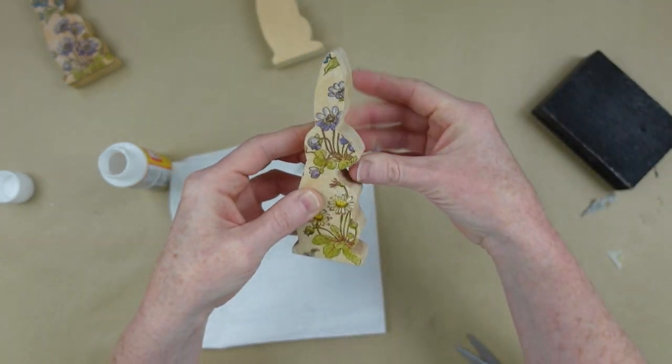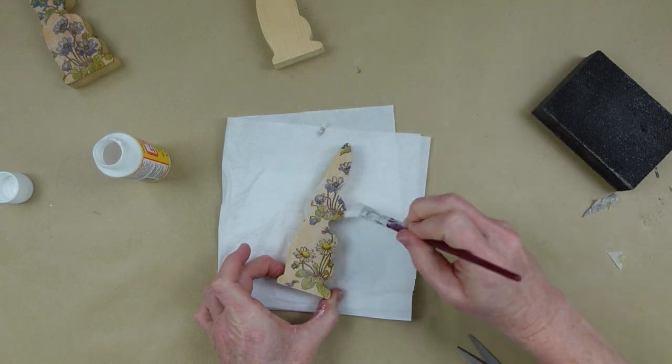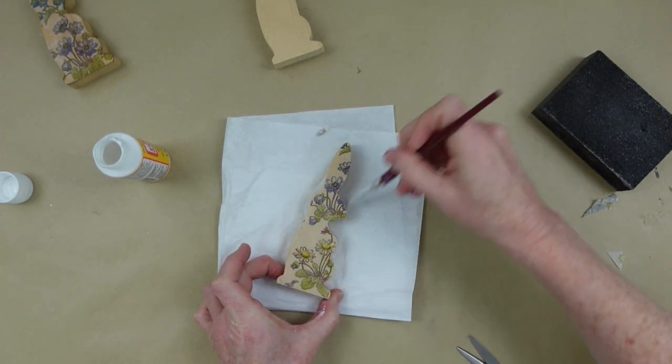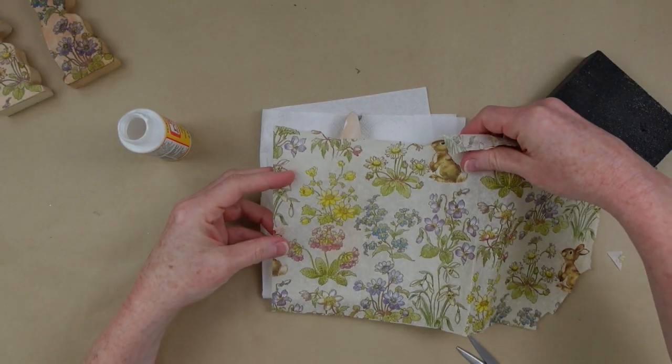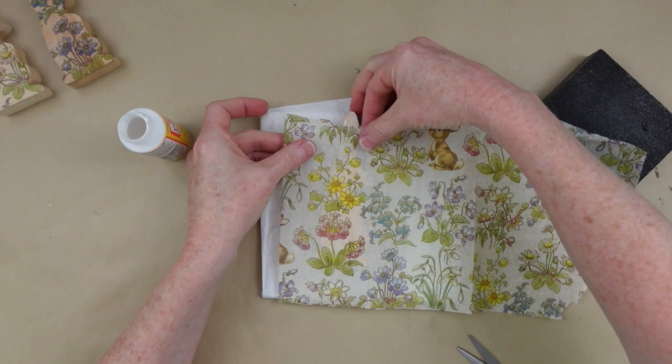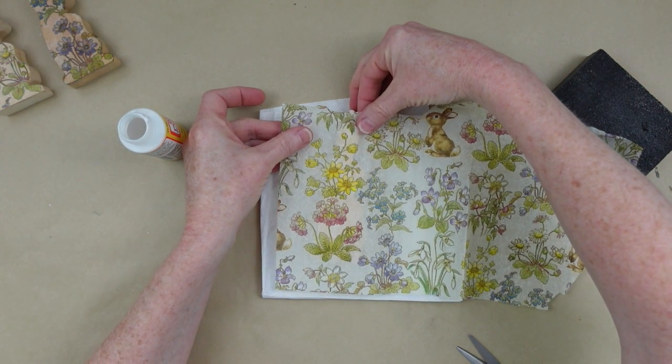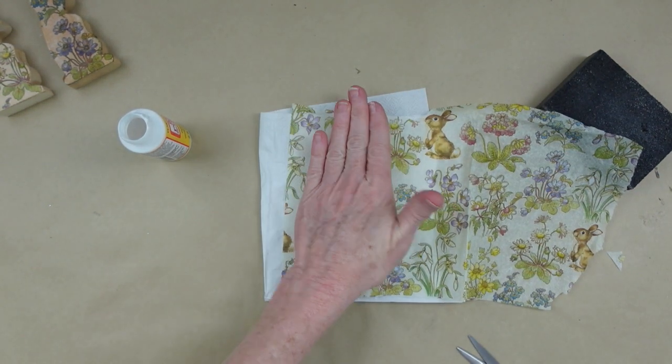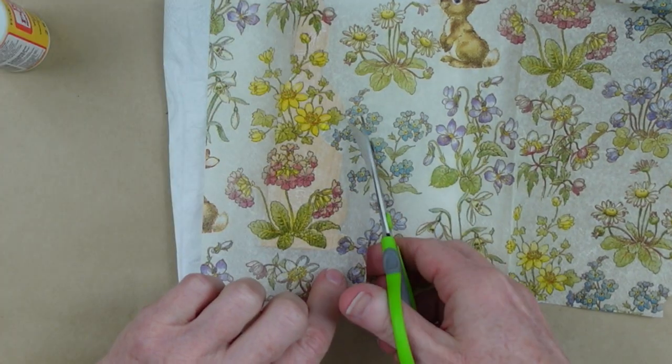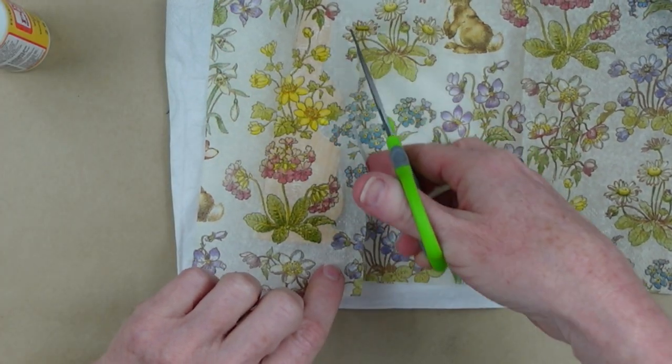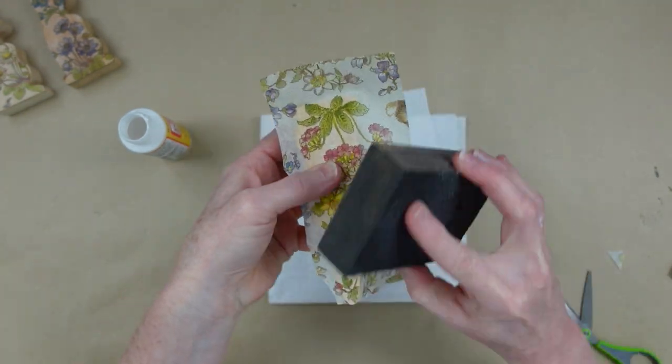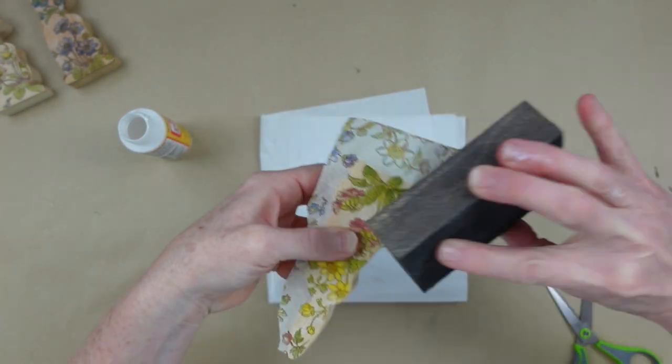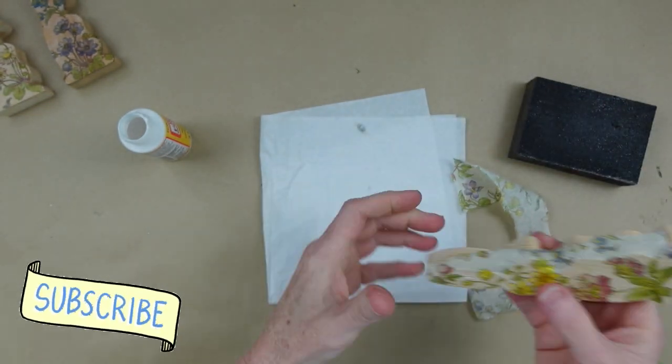You can use a nail file also if you don't have a sanding block. Then just be sure that you go back over with your Mod Podge to seal in your beautiful napkin. Here's another one. I'm going to use more yellow on this one. If you don't have these napkins, don't worry about it. Get napkins wherever you can find them. Right now, I think the spring and Easter is 40% off at Hobby Lobby. Go over there and grab you some pretty napkins, whatever style you like, whatever pattern you like.